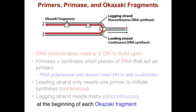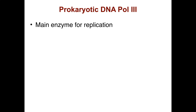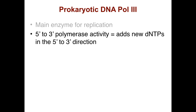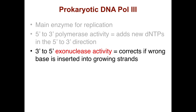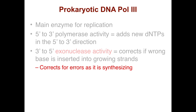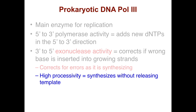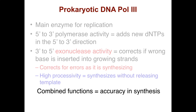Primers are placed at the beginning of each Okazaki fragment. DNA polymerase 3 is the main enzyme for replication. It has 5' to 3' polymerase activity, which means it adds new dNTPs in the 5' to 3' direction, and it has 3' to 5' exonuclease activity, so it can make corrections if the wrong base is inserted — this is proofreading. This polymerase has high processivity and synthesizes without releasing the template, leading to accuracy in synthesis.